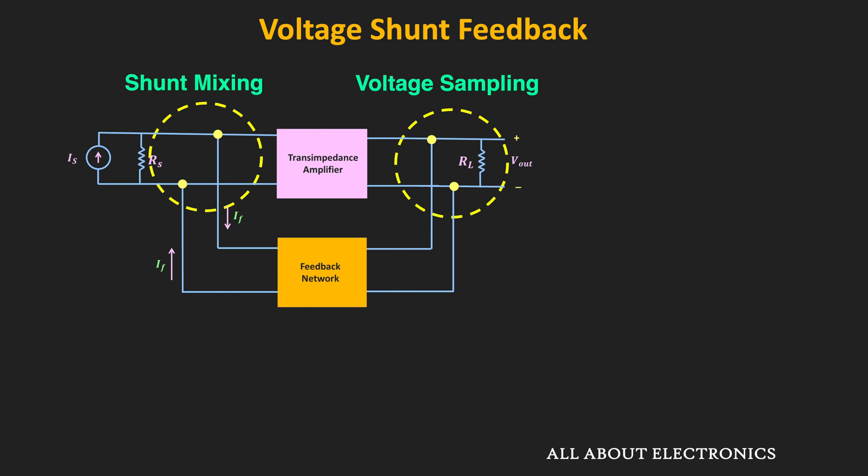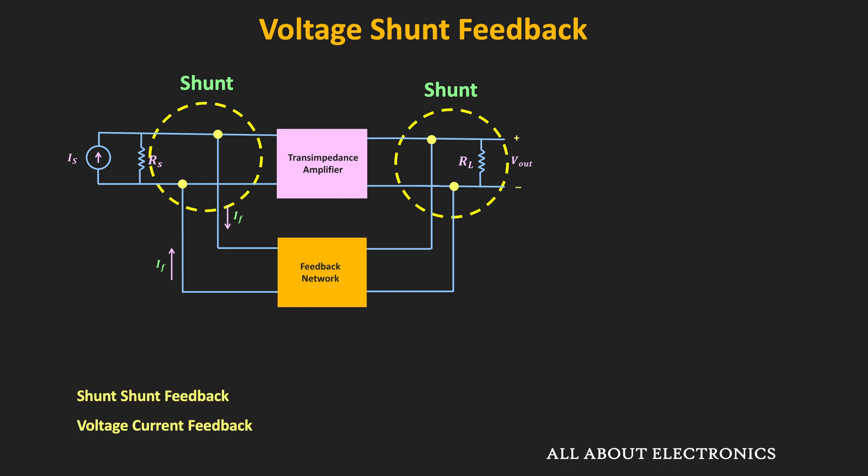That is why this type of feedback amplifier is known as the voltage-shunt feedback amplifier. In this feedback topology, the connection of the feedback network to the basic amplifier is via the shunt connection — both on the input and output side. That is why sometimes this topology is also known as the shunt-shunt feedback, and sometimes it is also referred to as the voltage-current feedback, because on the output side we are sampling the voltage signal while on the input side we are mixing the current signal.